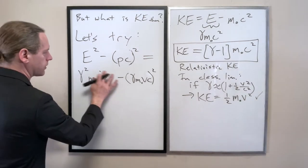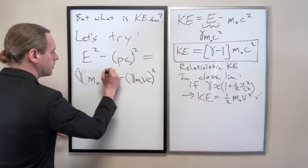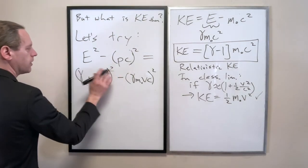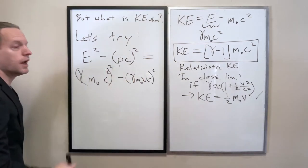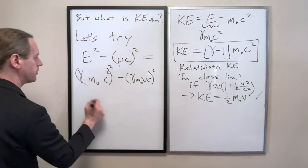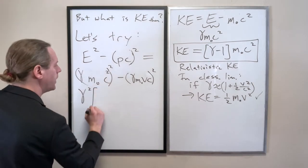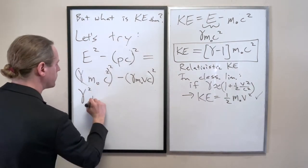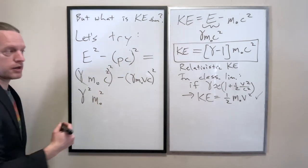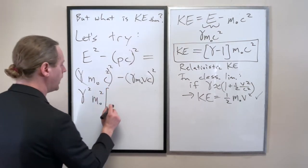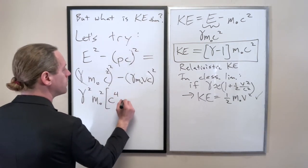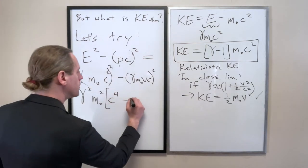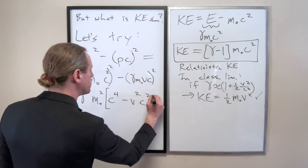Gamma M naught squared minus that squared. And now let's distribute the exponents here. So we have a gamma squared in front of everything. And actually we have a gamma squared and an M naught squared in front of everything. And now we're going to have a C to the fourth minus V squared C squared.